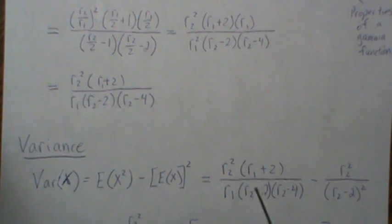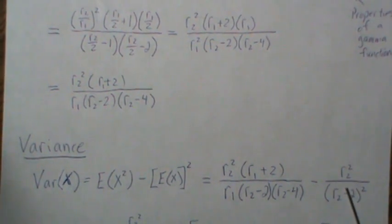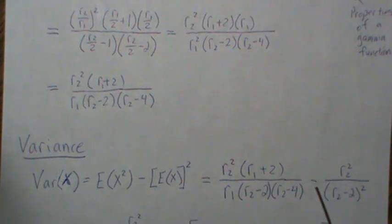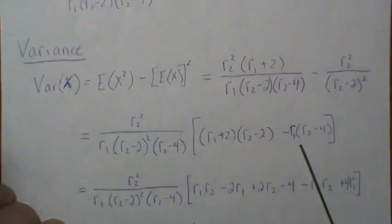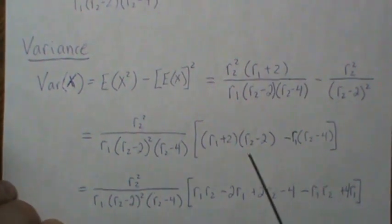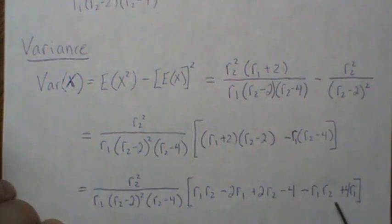Now the variance becomes the expected value of x squared minus the mean squared. So this is the expected value here, and we minus the mean squared. So then we factor out this quantity, and it leaves this. Then we multiply that, multiply that in, we get this.